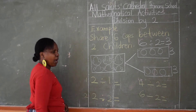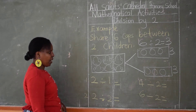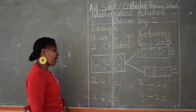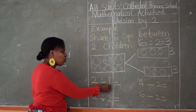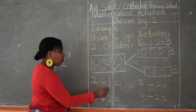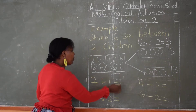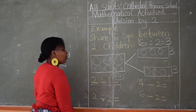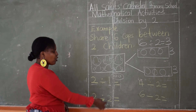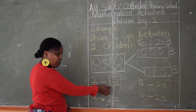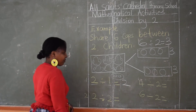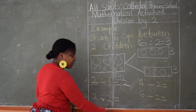Our next example: two divided by one. You have maybe two sweets and you want to divide by one. How many groups? We only have one group. In one group you have two sweets. You share with only one because you have one group. So my answer will be two. Two divided by one is two.